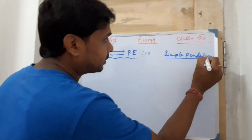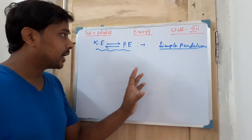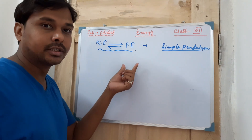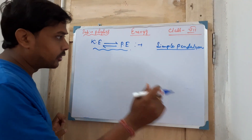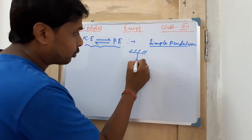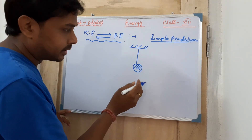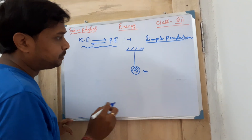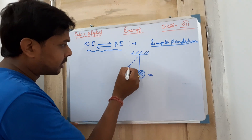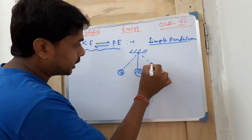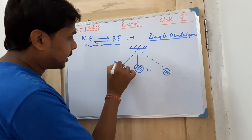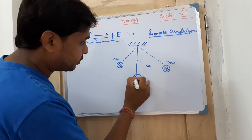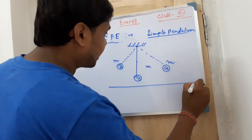In a simple pendulum, you get both conversions consecutively: kinetic energy is converted to potential energy and potential energy is converted back to kinetic energy. In a simple pendulum, one string is there with a bob of mass m, and it continuously oscillates, moving back and forth. The mass m is at different positions as it swings upward.